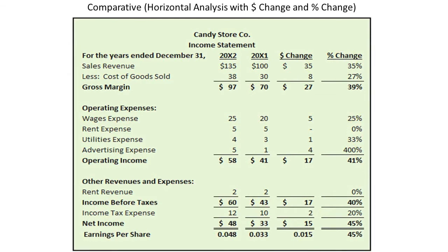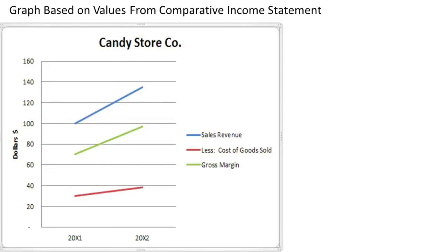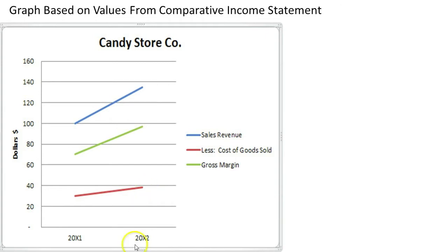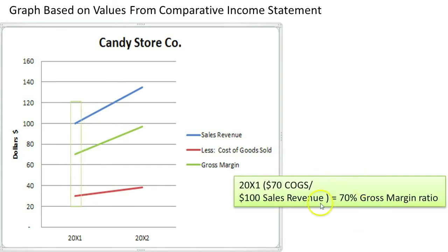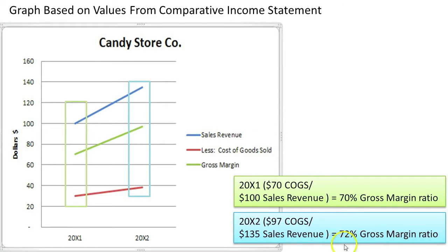These additional computations simplify the process of recognizing positive and negative trends as noted here. In addition, users have found that preparing a graph of each year's values helps to visually represent the trends that are occurring. As you can see, the sales revenue line is steeper — it increased at 35% from 20X1 to 20X2 — as compared to the cost of goods sold line that increased only 27% from 20X1 to 20X2. This is a positive sign because it indicates that not only is its gross margin increasing, but its gross margin ratio is increasing as well, from 70% in 20X1 up to almost 72% in 20X2.